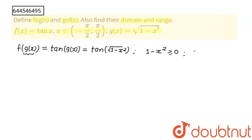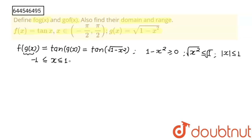From 1 - x² ≥ 0, we get x² ≤ 1. Taking square root on both sides, we get |x| ≤ 1, which opens as -1 ≤ x ≤ 1. So the domain of f(g(x)) is [-1, 1].